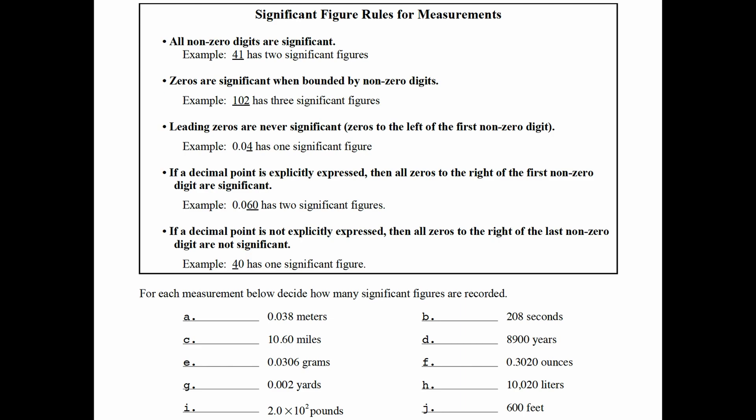The next rule is leading zeros are never significant. These would be zeros to the left of the first nonzero digit. So in the example 0.04, there's only one significant figure. The zeros to the left of the four are not significant because they're leading zeros. They're just there to tell you the scale of the measurement, but they are not important digits that a measurer had estimated.